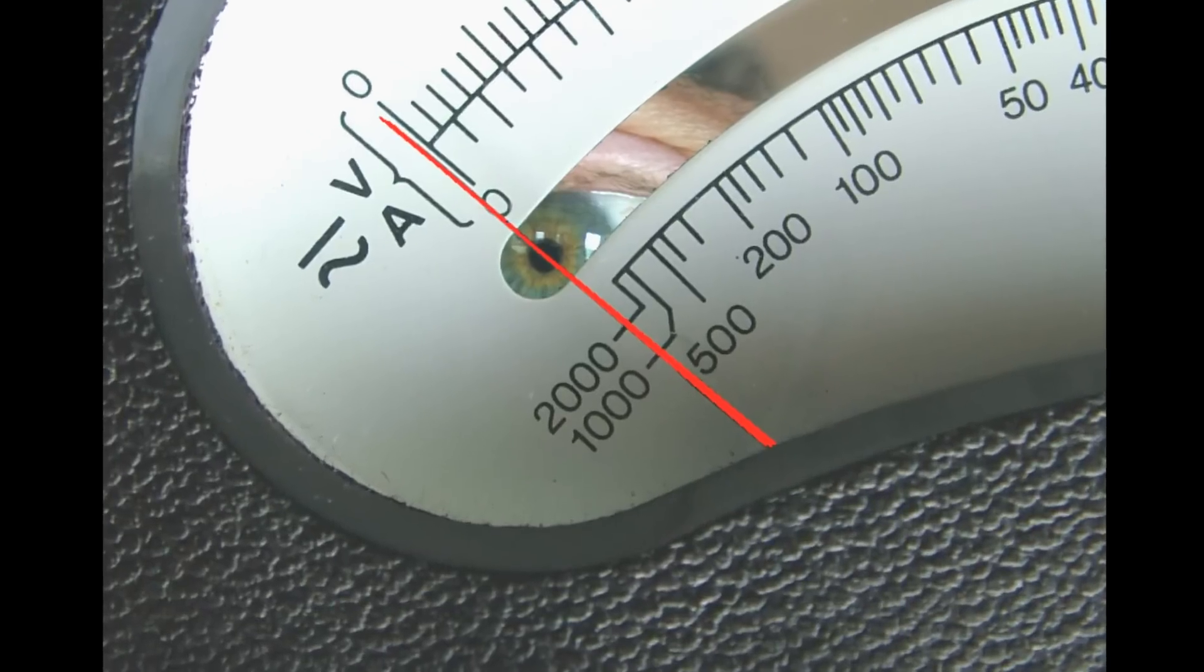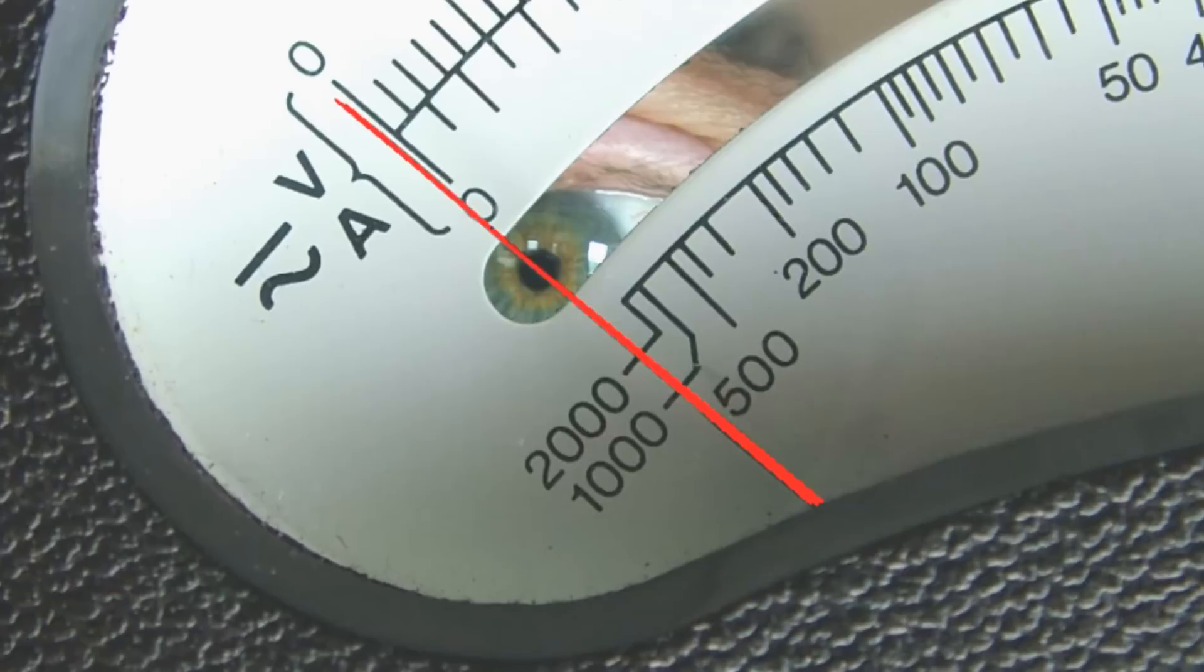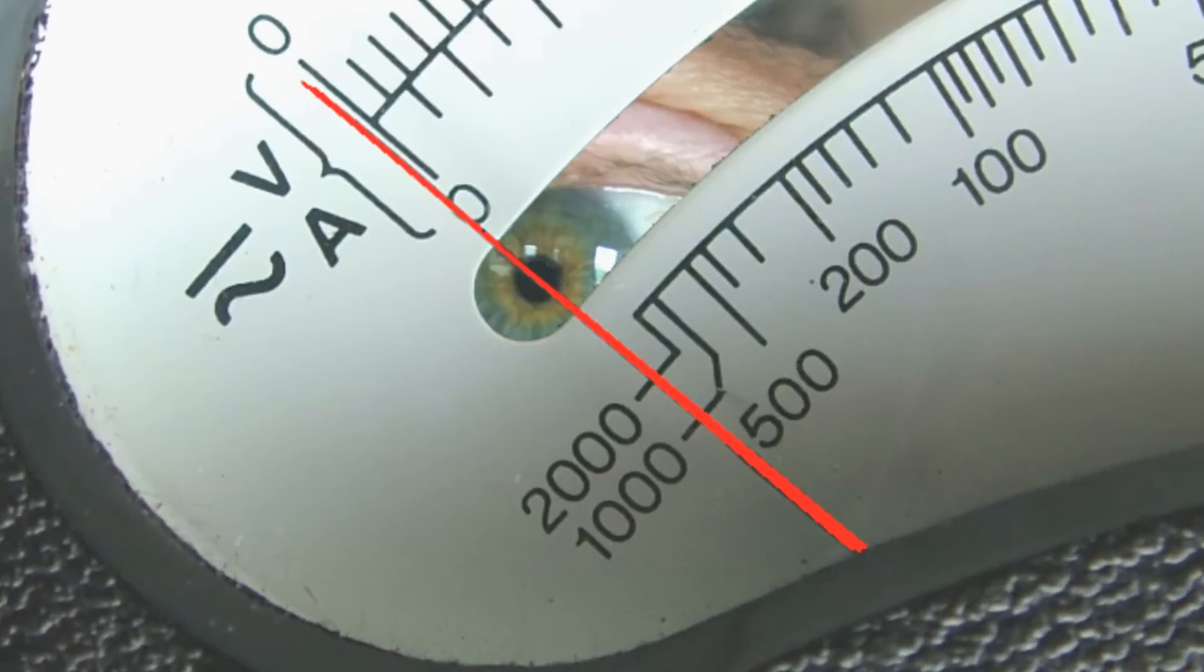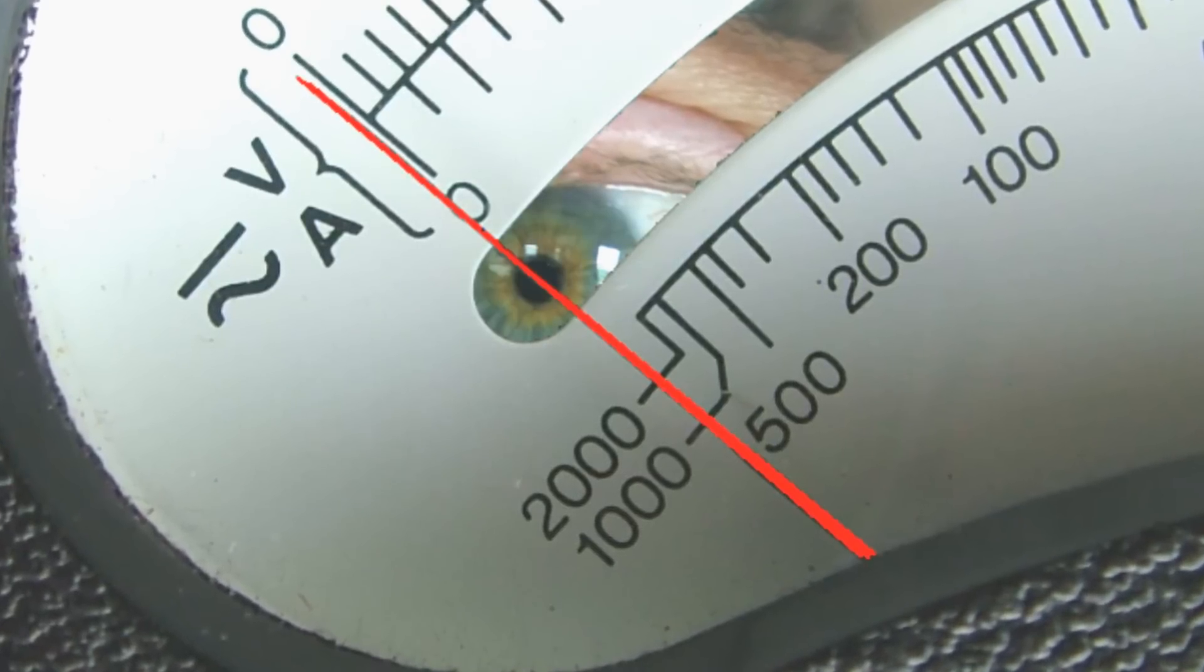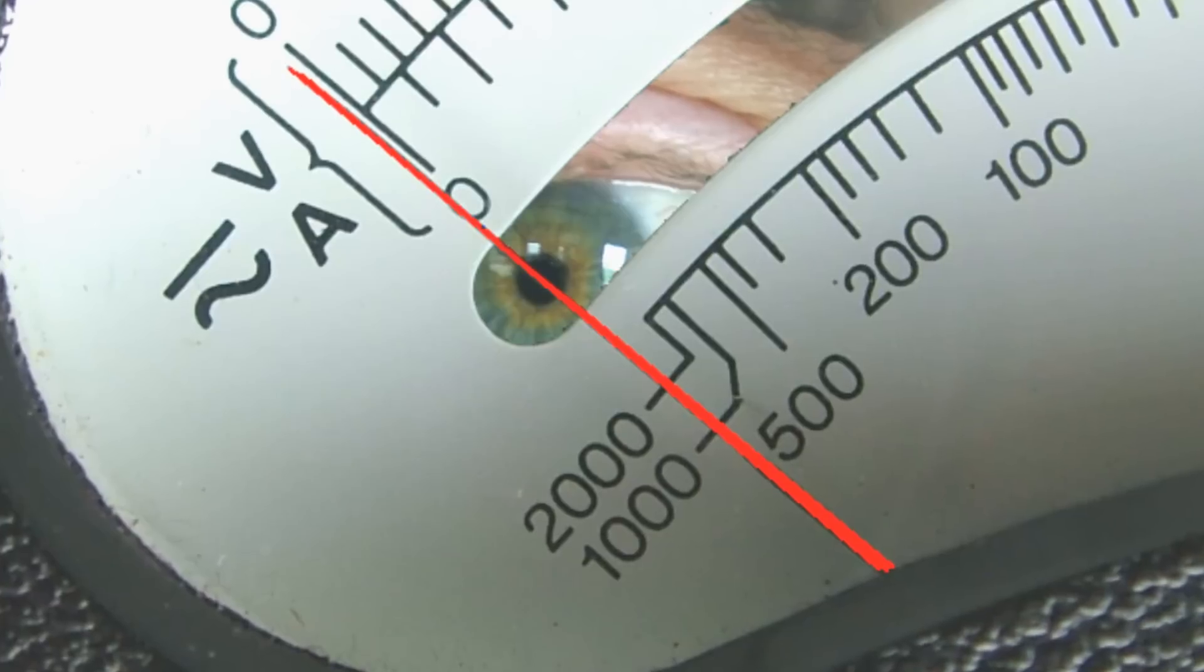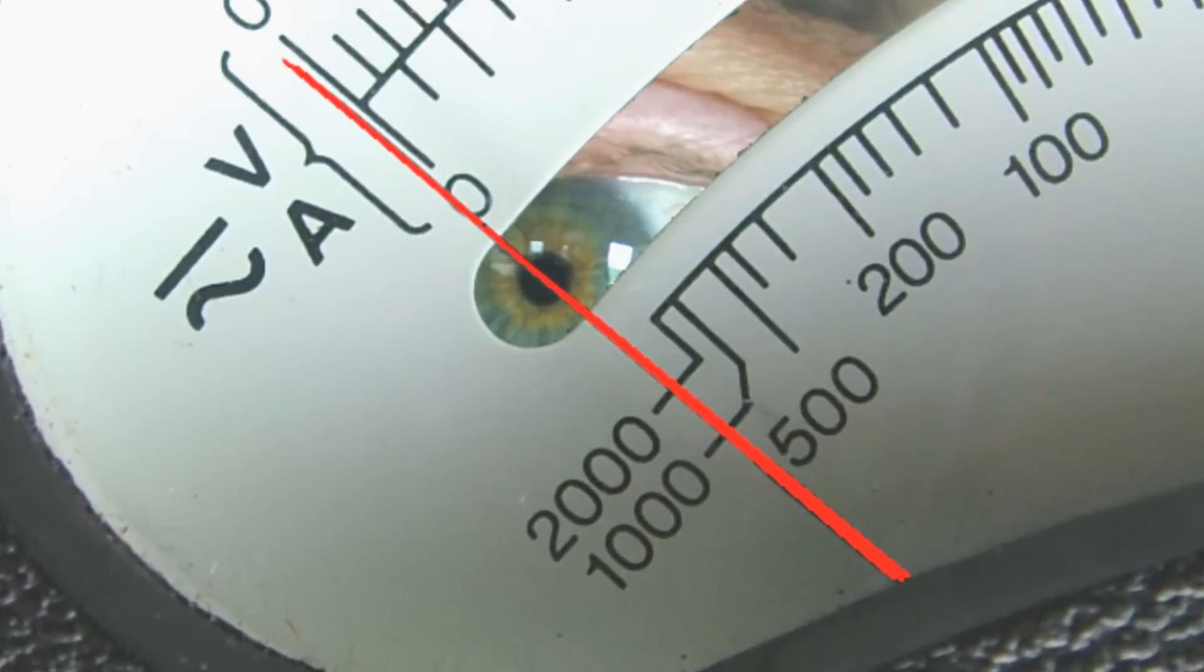Only when your eye is in line with the pointer or the needle and it's, as it were, striking through your pupil, that is when you know you are definitely above the needle.